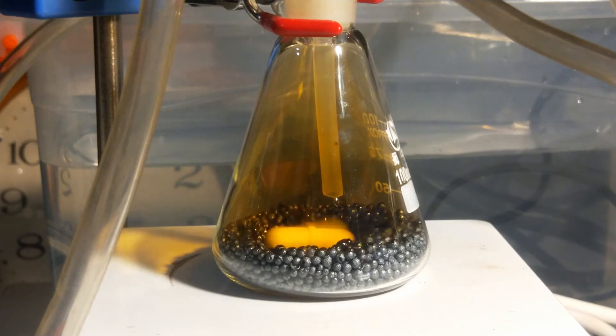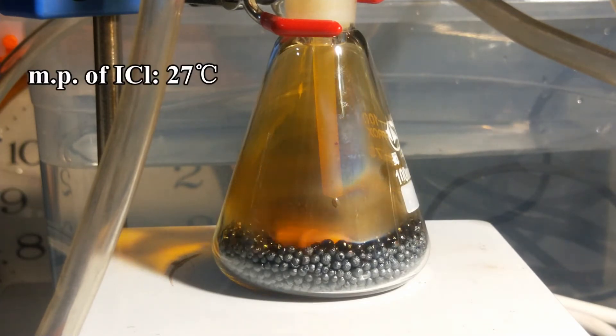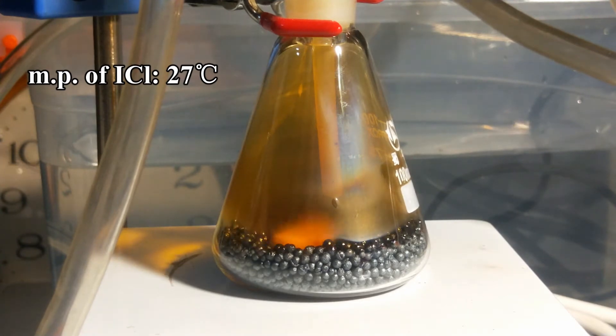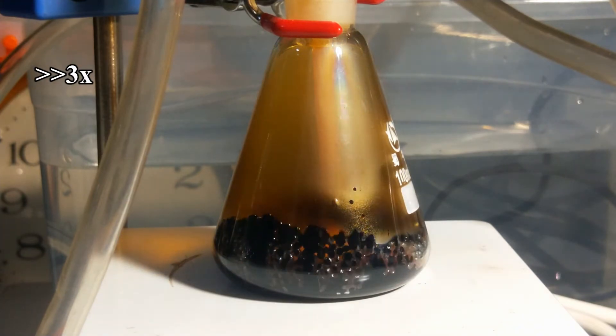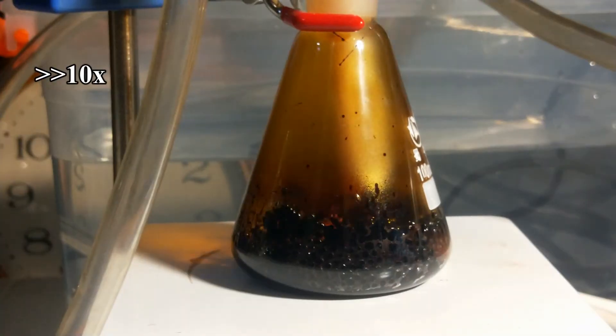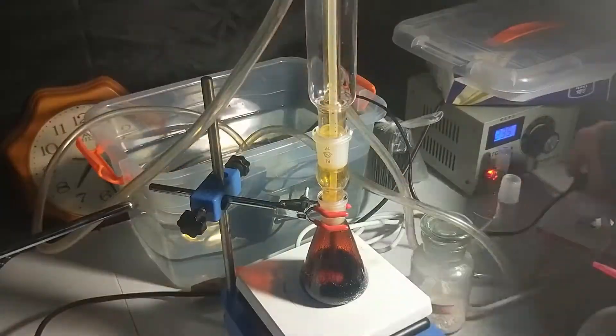According to the internet, the melting point of pure iodine monochloride is 27 degrees Celsius, but the mixture of iodine and iodine chloride has a lower melting point, even below 10 degrees Celsius, so that the reaction is not complete even after the mixture was fully liquefied.